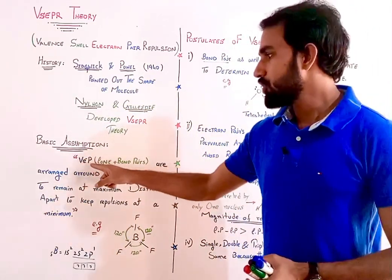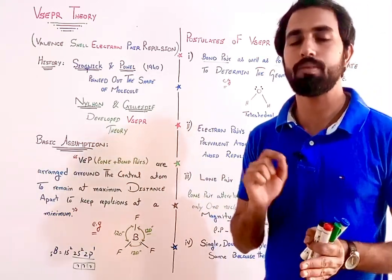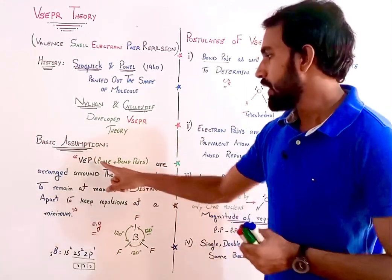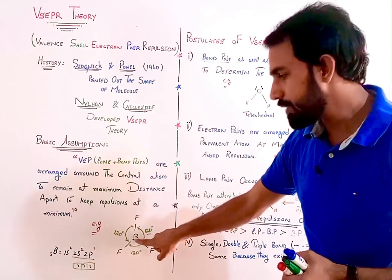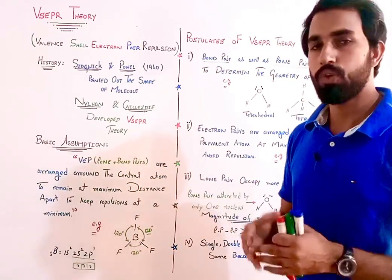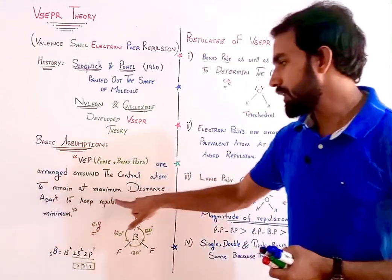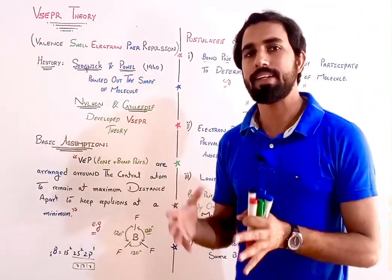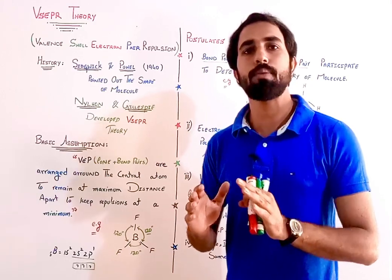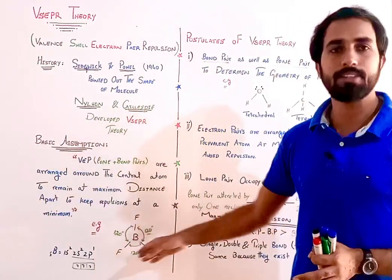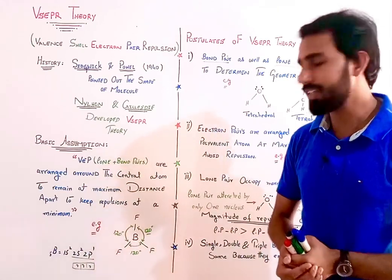तो guys, valence electron pairs — अब valence electron pairs जो होंगे, उसमें electron pairs में lone pair भी शामिल होते हैं और bond pair भी शामिल — दोनों pairs, lone pair and bond pairs, are arranged around the central atom। कोई भी atom जिसके साथ atom दूसरे attach हुए हैं, वो polyvalent central atom होगा। At maximum distance apart to keep repulsion at a minimum — यानि कि जो central atom है, उसके साथ attach होने वाले atoms खुद को इस तरह से arrange करेंगे कि वो एक दूसरे से maximum distance पे होंगे, ताकि इनके दरमियान जो repulsion है, वो minimum रह जाए।